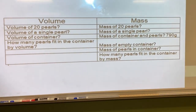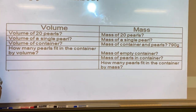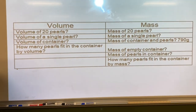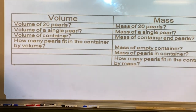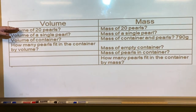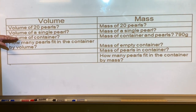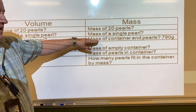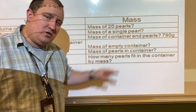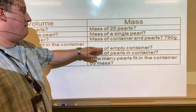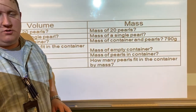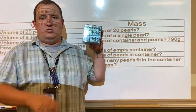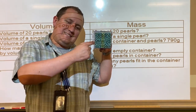So let's go ahead and pan over here. This table should already be in your notes as a part of the write-up for this lab. It has got a few things that we are going to measure, but it's also got some things that you're going to have to calculate. Some things that are going to be measured are the volume of 20 pearls and the volume of our container, the mass of 20 pearls. We've already been given the mass of container and pearls, and then we're going to need a mass of empty container.